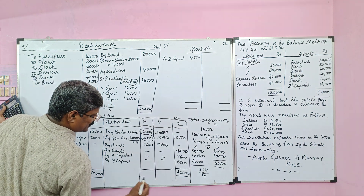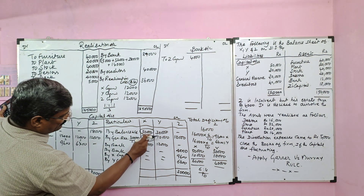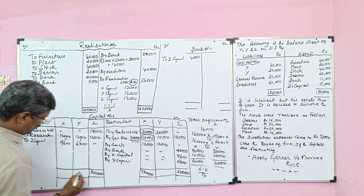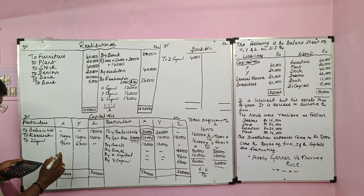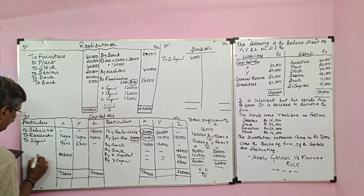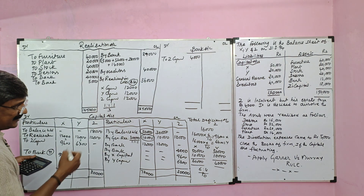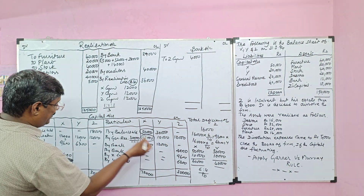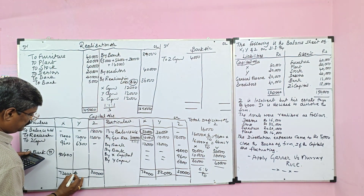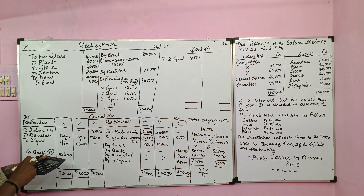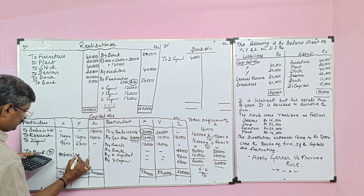Now we will balance the solvent partners. For X: debit side total 21,600; credit side value 72,000. Credit side is heavier, so 72,000 minus 21,600 gives surplus amount available for X: 50,400. It should be transferred to the bank account. Entry: X capital debit to bank. Likewise for Y: credit side is heavier than debit side. 52,000 minus 12,000 minus 6,400 gives surplus funds available for Y: 33,600.